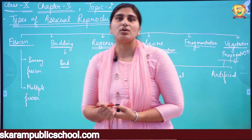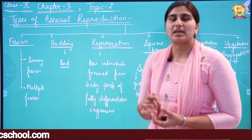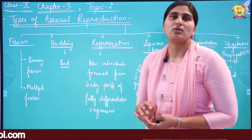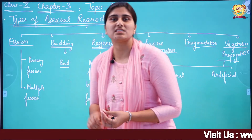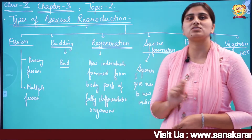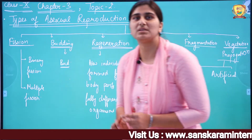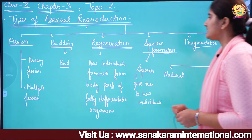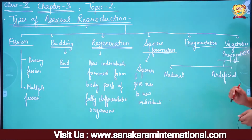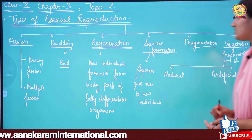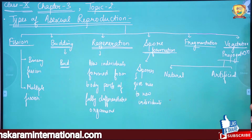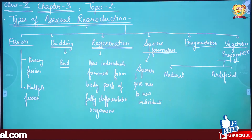As you all know, in asexual reproduction there is involvement of only a single parent. There is no formation of gametes, no fusion of gametes, and no variations. Please take a screenshot of the board so that it will be easy for you to make notes.